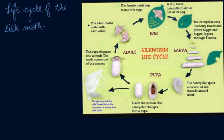This is the female silkworm that lays many tiny eggs. You can see the tiny eggs here. The female moth lays many tiny eggs, and they live on the leaves of the mulberry tree, growing bigger and bigger on those leaves.